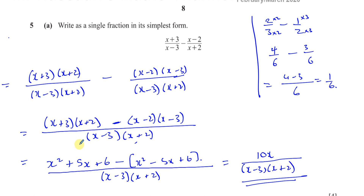So remember the minus sign. x squared minus x squared is zero. 5x minus minus 5x is 5x plus 5x, which is 10x. And 6 minus 6 gives zero. So you're left with 10x over x minus 3 times x plus 2. That completes question 5 part A — algebraic fractions.